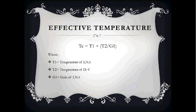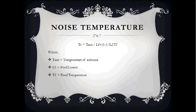Effective temperature depends upon three factors: the temperature of the LNA amplifier, the temperature Tc, and the gain of the LNA amplifier. The formula is TE = T1 + T2/G1. Noise temperature depends upon the temperature of the antenna, feeder losses, and the feed temperature.